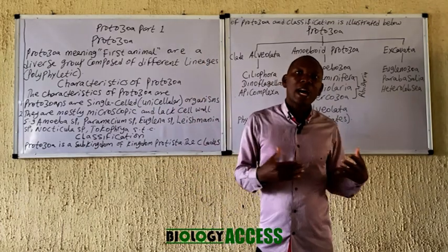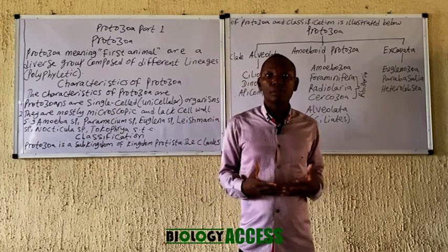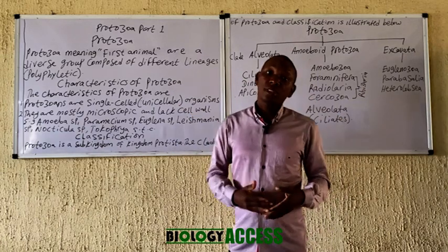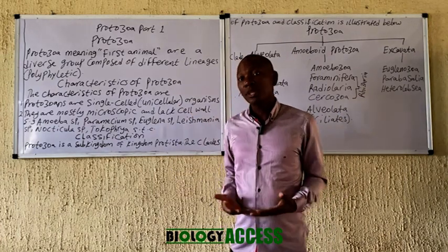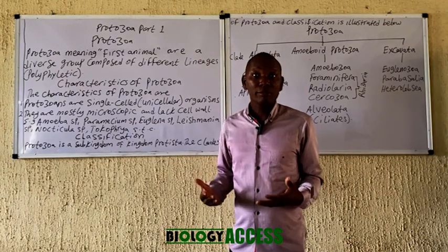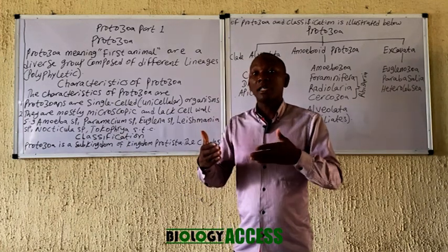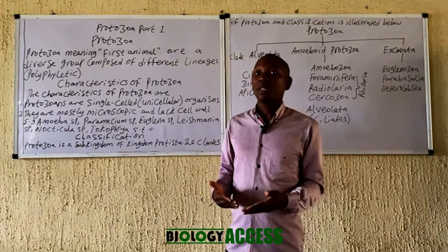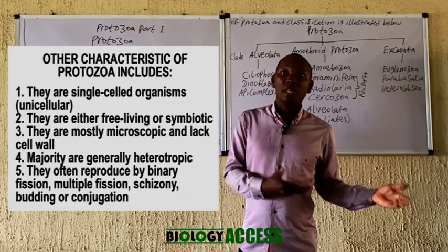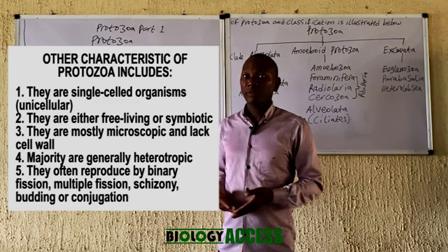This group is actually a polyphyletic group, meaning they originate from different ancestors. Their characteristics include being microscopic and unicellular. Majority of them are heterotrophic, while some few such as in Euglena are actually autotrophic, or even some in the new flagellates.